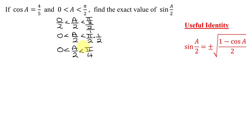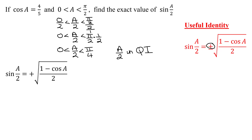So A over 2 lies between 0 and pi over 4. Pi over 4 is in quadrant 1. Therefore, angle A over 2 is also in quadrant 1. All trig functions are positive in quadrant 1, so I'm going to pick the positive sign on my formula. My formula becomes: the sine of A over 2 is the positive square root of 1 minus cosine A, divided by 2. I just plug in 4 fifths for the cosine of A.